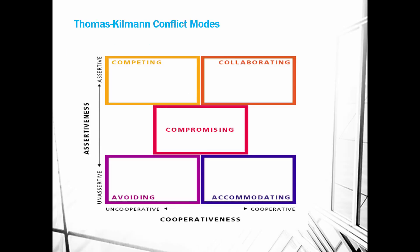The chapter discussed five different modes of conflict from the Thomas Killman Conflict Mode Instrument. You can look it up online to find out your own style preferences. These modes differ on a continuum of how assertive you are and how cooperative you are with others. The five modes are: collaborating, competing, compromising, accommodating, and avoiding.